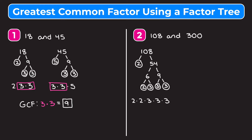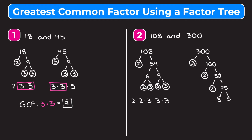Now let's make a factor tree for 300. Let's break this up into three and 100. Three is prime, so I'll circle it. We break 100 into two and 50. Two is prime, so I'll circle it. We break 50 into two and 25. Two is prime, and we'll break 25 into five and five. We're finished with our factor tree for 300. The prime factorization of 300 is two times two times three times five times five.